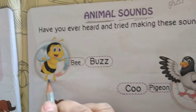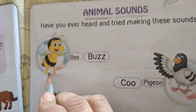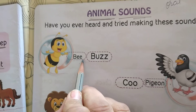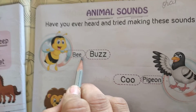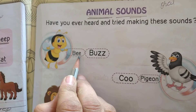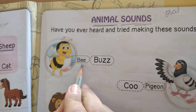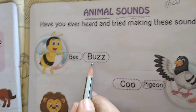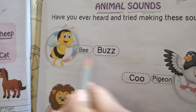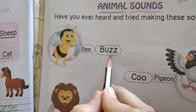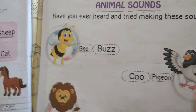Which picture is this? Which animal or bird? Bee. B-double-E. The bee says buzz.